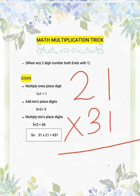Without making any delay, let's get started. So first step is multiply its ones place digit. 1 into 1 gives you 1.